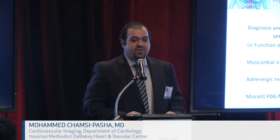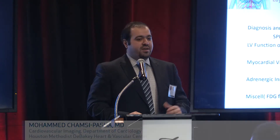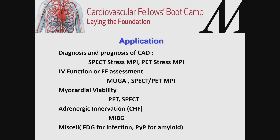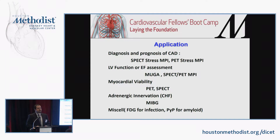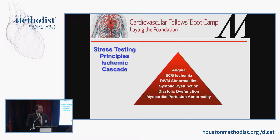The most common application is diagnosing and risk stratifying patients with coronary artery disease. The common modalities are SPECT — single photon emission computed tomography — or PET, positron emission tomography. Less commonly now, with advances in echo and MRI, nuclear imaging is used for LV function or ejection fraction assessment. Viability is a big application available with both SPECT and PET. In congestive heart failure, there is a relatively new tracer called MIBG for risk stratifying heart failure patients, and there are other miscellaneous indications.